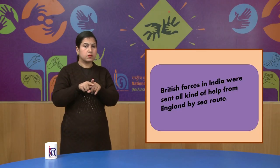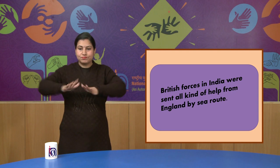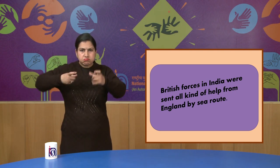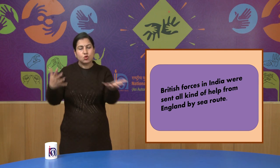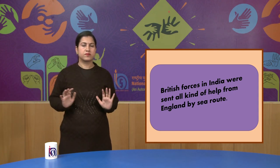The sixth reason for the failure of the 1857 revolt was that the British government was helped by England. The British forces in India were sent all kinds of help from England by sea route, and that is the reason there was no shortage of forces, resources, money, or weapons for the British side in India.